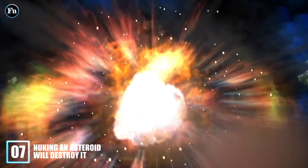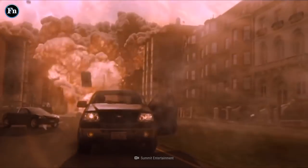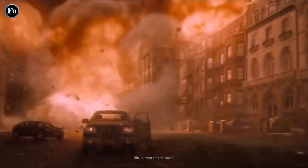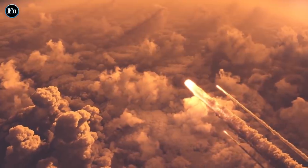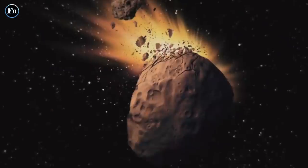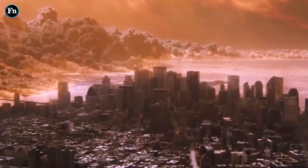Number 7: Nuking an Asteroid Will Destroy It. When it comes to disaster movies, there are a few that have had as much of a cultural impact as Armageddon. The premise of the film is that there's a massive asteroid heading towards the Earth, and the main characters must devise a plan to stop it, which consists of literally nuking an asteroid, preventing it from destroying the Earth completely.